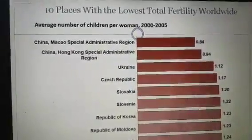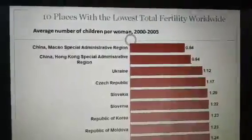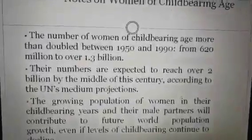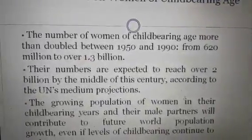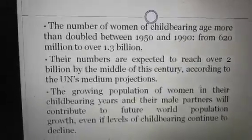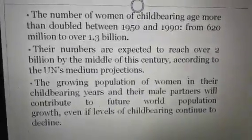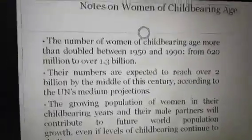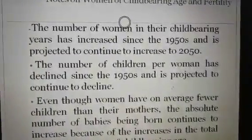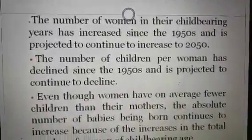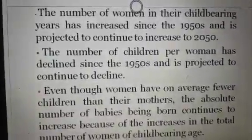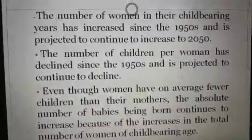Regarding women of childbearing age, the number of such women more than doubled between 1950 and 1990, from 620 million to over 1.3 billion, and that number is still growing. Their numbers are expected to reach over 2 billion by the middle of this century, according to the United Nations medium projection. The number of women in their childbearing age has increased since the 1950s and is projected to continue increasing to 2050.